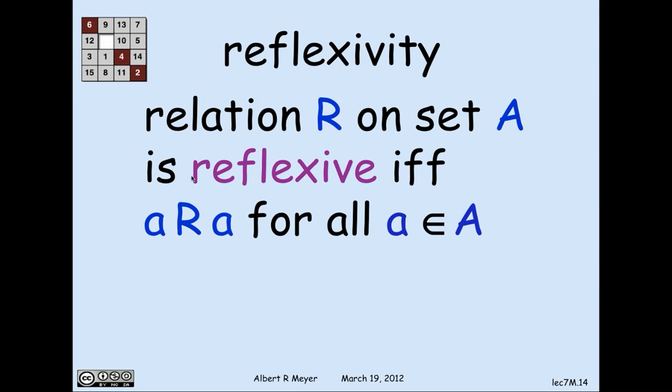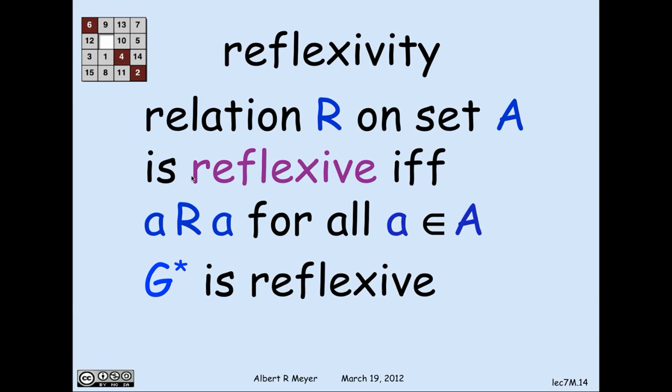The property that distinguishes weak from strict partial orders is reflexivity. A relation r on a set is reflexive if every element is related to itself — i.e., a r a for all a in the domain A. The walk relation g* including walks of length 0 is reflexive, because by definition there is a length-0 walk from any vertex to itself.